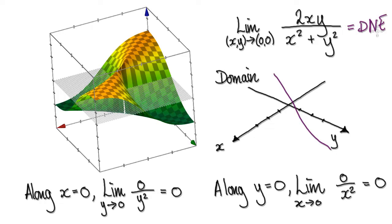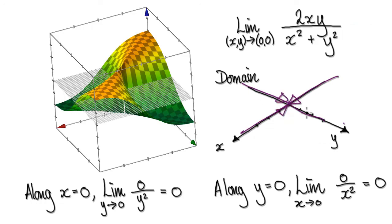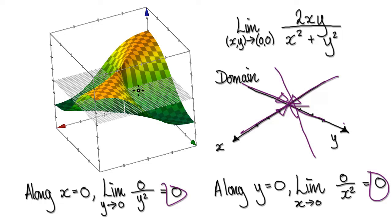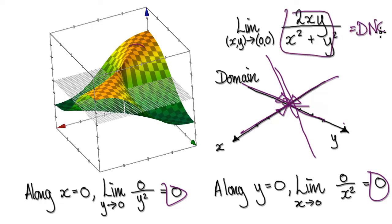So in this example, if you approach along the axes it gives you 0, but if you approach in a straight-line manner it changes. Because if you look at this surface, depending on how you approach your origin, the height — the output of this function — changes. Then we can conclude that the limit does not exist.